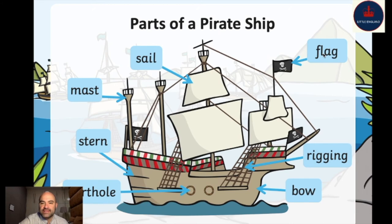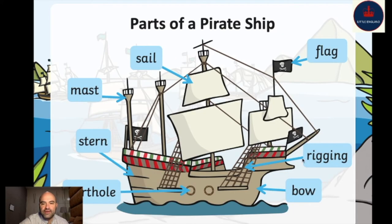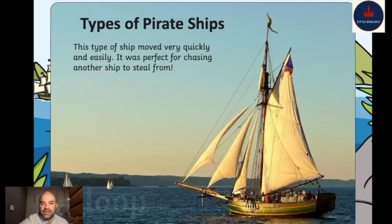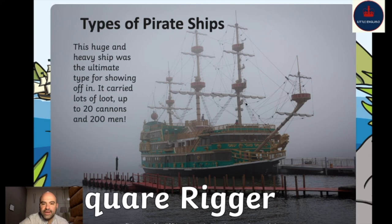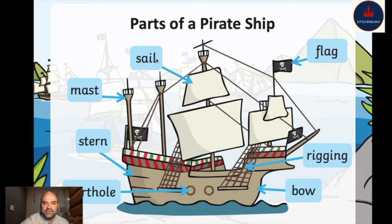Let's find the flags on the square rigger — how many do you see? I don't see any flags at all, so I don't think there are any. Now let's look for rigging. I see one, two, three, four — and possibly some smaller ones — five and six. So that's six rigging on the square rigger.